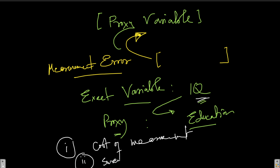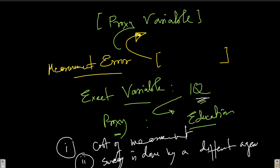The survey is done by a different agency, not by the researcher. The ministry does not know what exactly a researcher in a university corner requires. Even if the ministry knew, it is very difficult to collect data for every researcher's needs. So essentially they collect data in a standard format, and researchers end up using proxy variables.